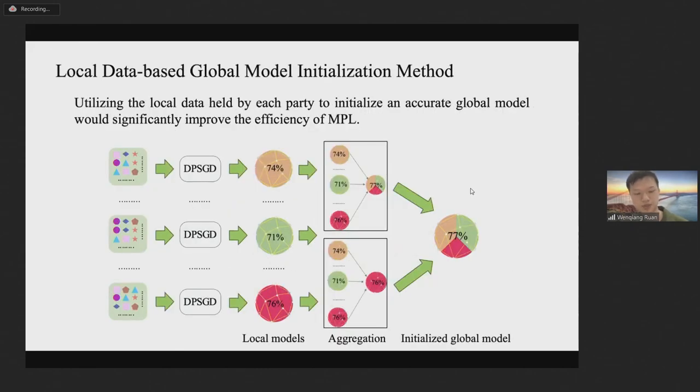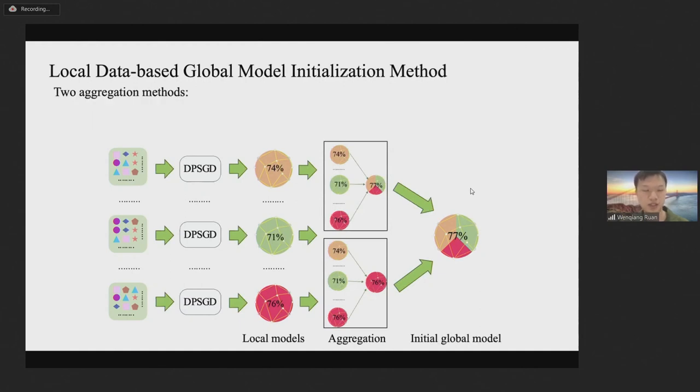Next, I introduce our proposed local database global model initialization method. An accurate initial global model would significantly reduce the number of iterations in the global model training process. Therefore, we propose to utilize local data held by each party to initialize an accurate global model. That is, parties first use their own local data to train local models. Then parties run a secure aggregation protocol to aggregate local models as the initial global model and run a secure DPSGD model.